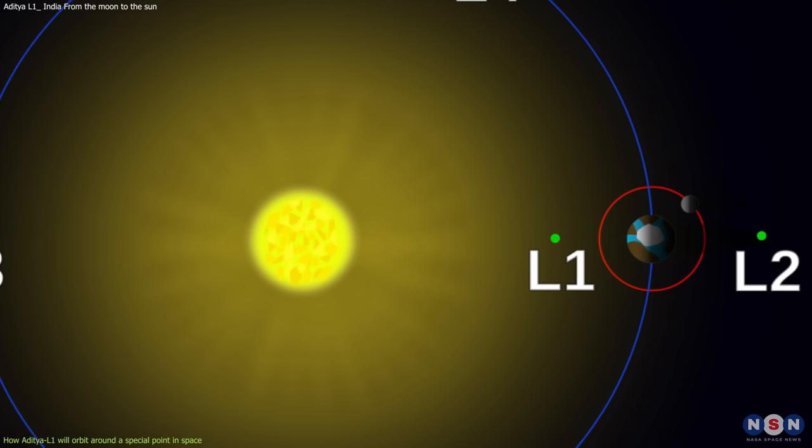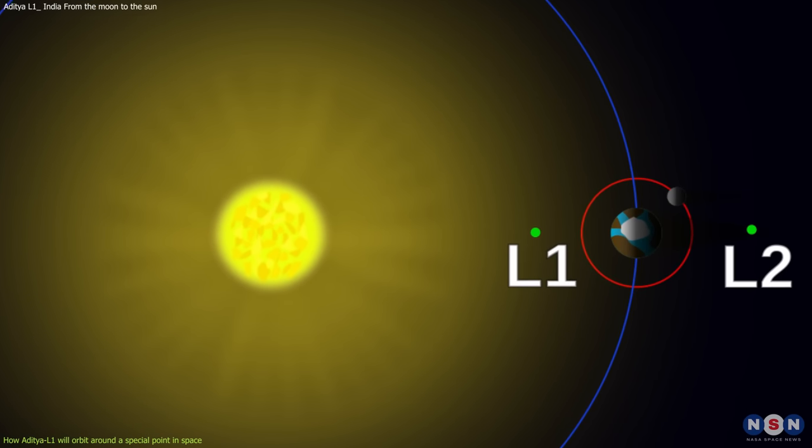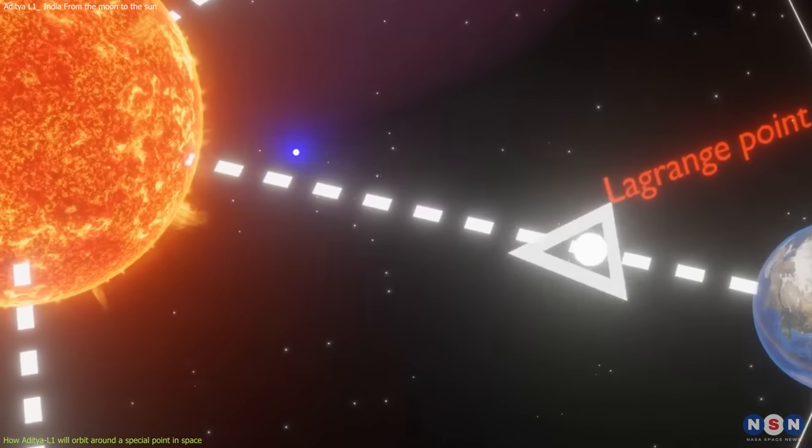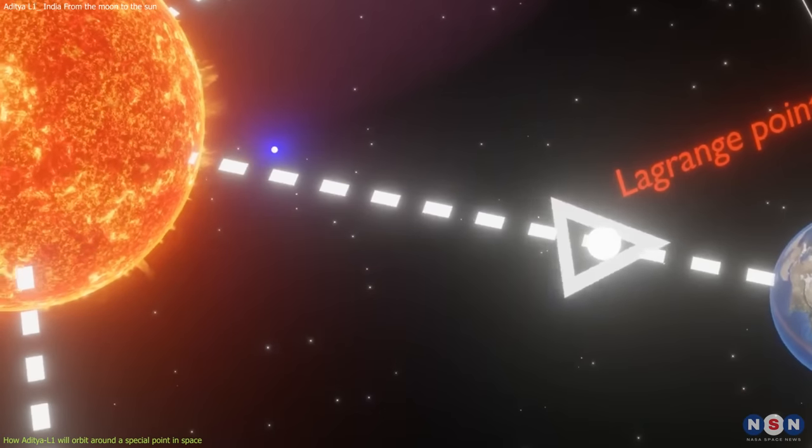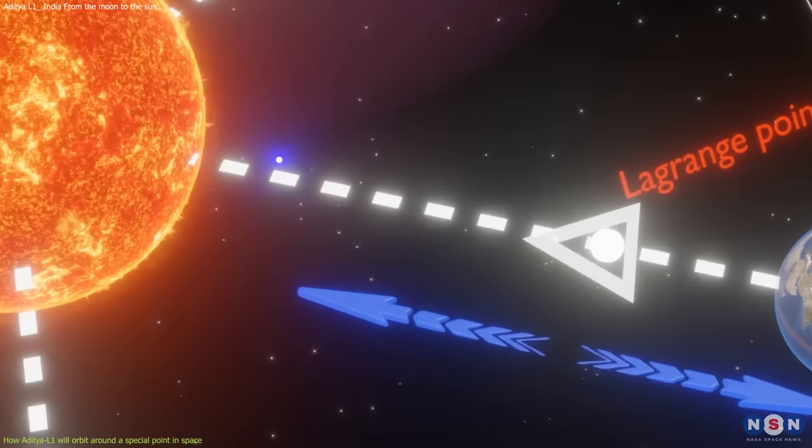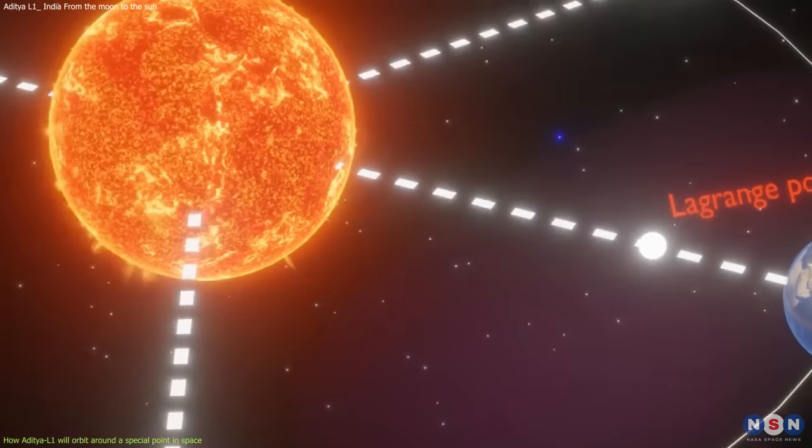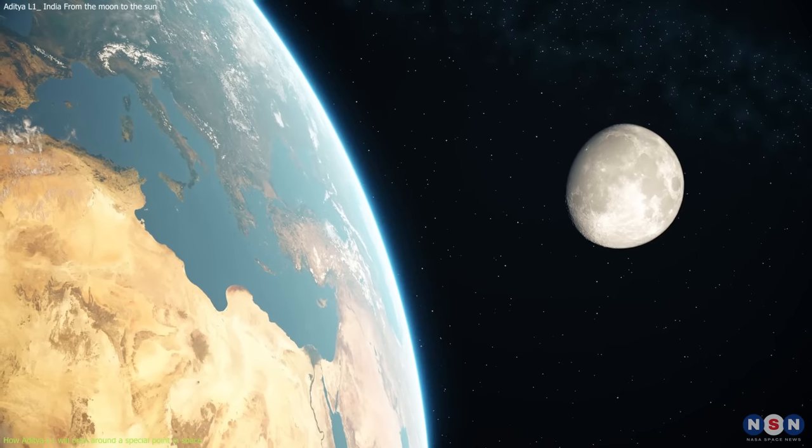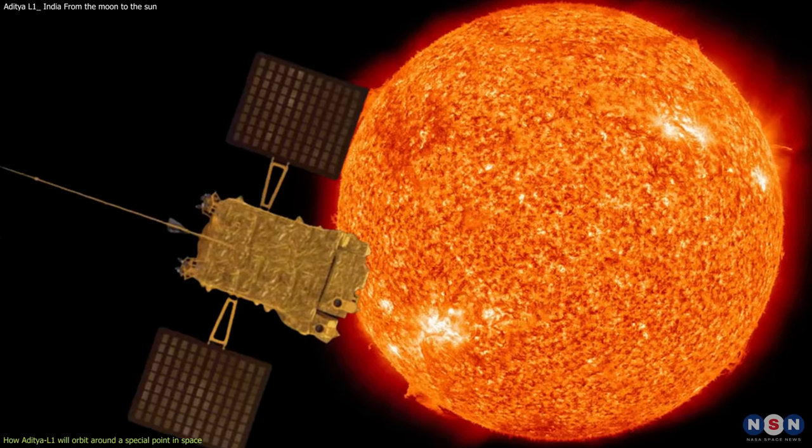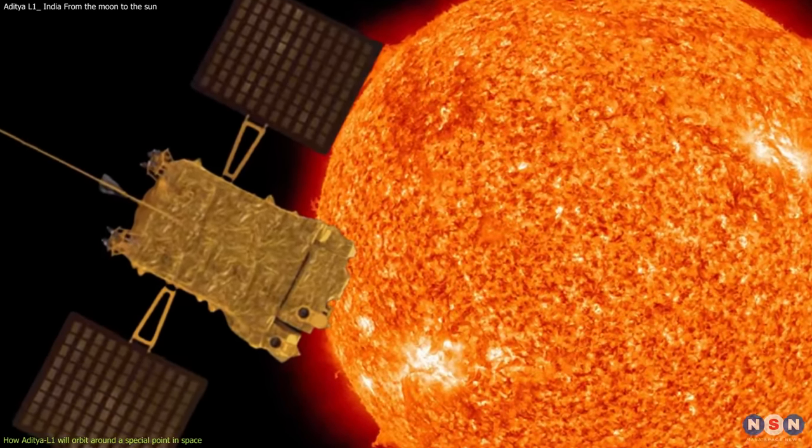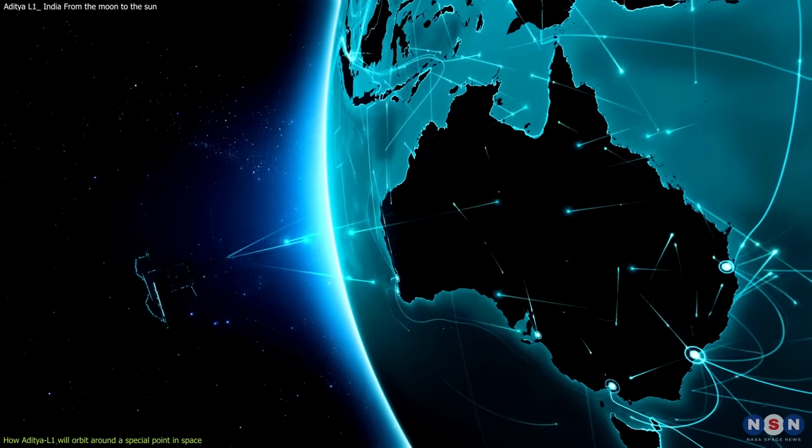The answer is a special point in space called Lagrange point 1, or L1 for short. L1 is a point where the gravitational forces of Earth and the Sun balance each other out, creating a stable orbit for the spacecraft. It is about 1.5 million kilometers from Earth, which is about 100 times farther than the Moon. From this point, Aditya L1 can have an uninterrupted view of the Sun at all times and also communicate with us easily.